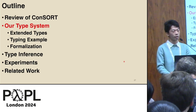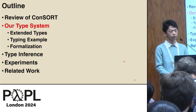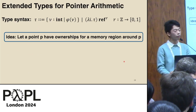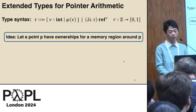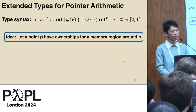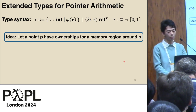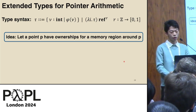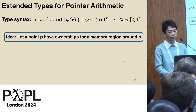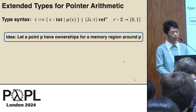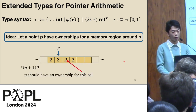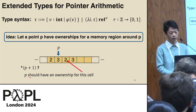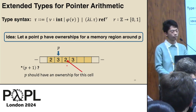Now let me explain our extension to handle pointer arithmetic. In consort, a reference type represents the ownership and refinement type information for the cell pointed to by the reference. In the presence of pointer arithmetic, however, we need to let a pointer have ownership for multiple memory cells, not just for the single cell at P. For example, for the expression P plus 1 to be valid, P should have ownership for the cell pointed to by P plus 1 instead of P itself.